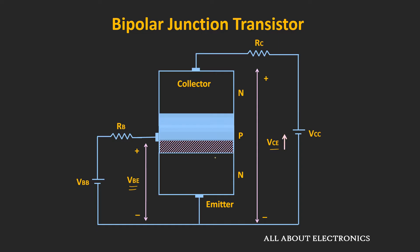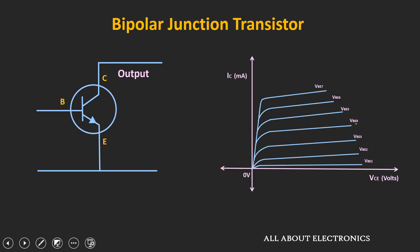This effect is known as base width modulation. Due to the reduction in the effective base width, the chances of recombination in the base region will reduce. Due to this narrower base width, more electrons will be able to cross the base region without recombination. And because of that, the collector current Ic will increase. That means for the given value of base-emitter voltage, as we increase the collector-to-emitter voltage, the collector current Ic will increase. This effect is known as the Early effect.